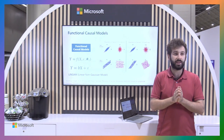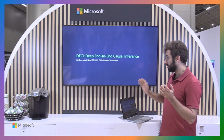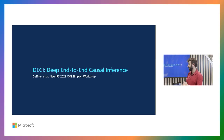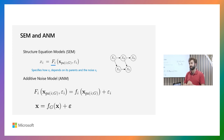This brings us to DESI, our deep end-to-end causal inference framework, which we're also presenting in more depth on Friday at the causal machine learning for real world impact workshop. Basically what we do is exactly that: we have a structural equation model which is an additive noise model, but rather than F being a linear function, it now becomes a deep neural network, which allows us to model much more complicated functional relationships across all types of data.